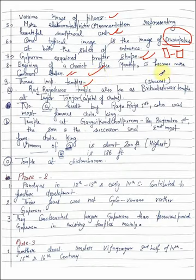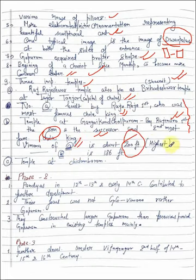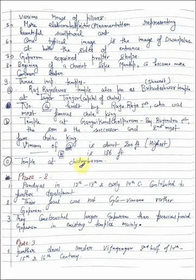Three important temples: Rajarajeshwar temple, also known as Brihadeshwar temple, which is a Shivaite Shiva mandir at Thanjavur, capital of Cholas, built by Rajendra I who was the most famous Chola king. Then temple at Gangaikonda Cholapuram by his son and successor, the second most famous Chola king. The first temple Rajarajeshwar temple has height of 200 feet, and the temple Rajendra I built was 186 feet. Another example is temple at Chidambaram.